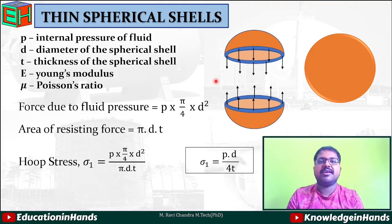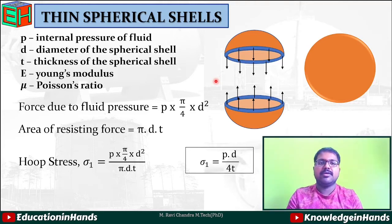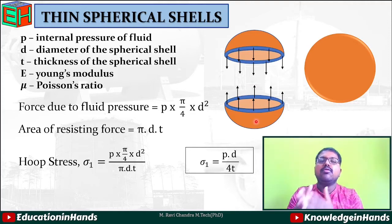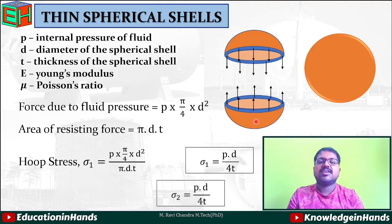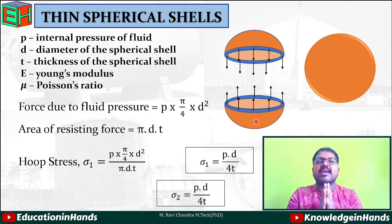In addition to hoop stress, we also have longitudinal stress failure, which may occur vertically. In the case of spherical shells, the longitudinal stress is also equal to the hoop stress, so σ₂ = pd/4t. Therefore, both hoop stress and longitudinal stress are equal to pd/4t.